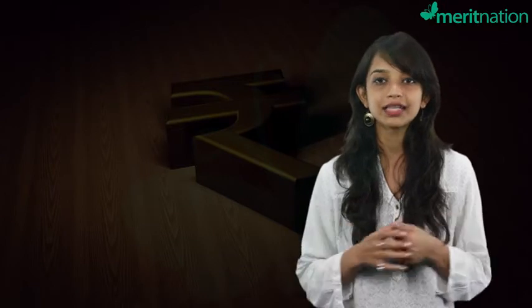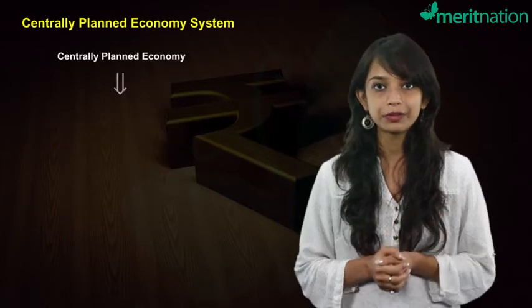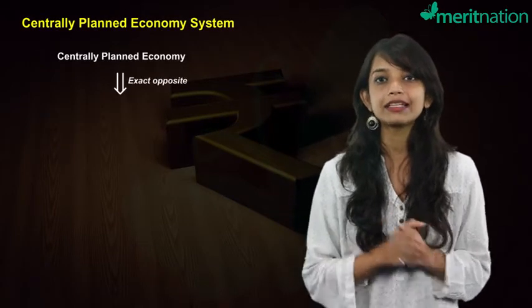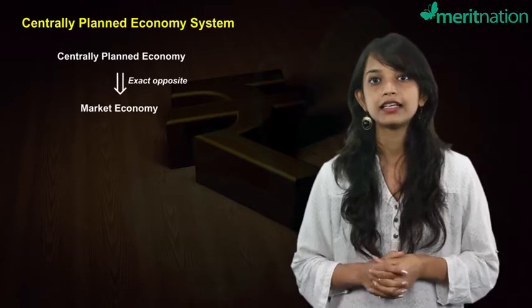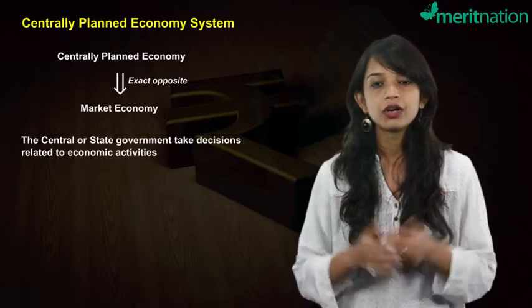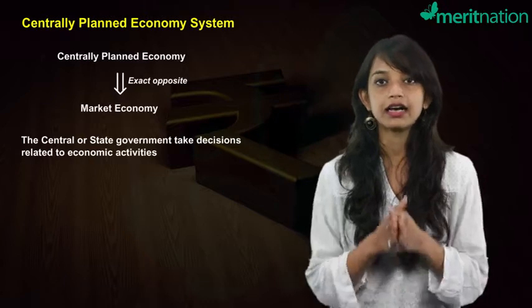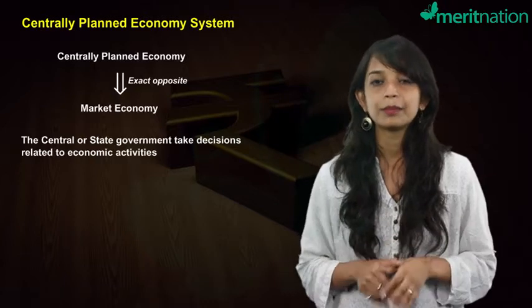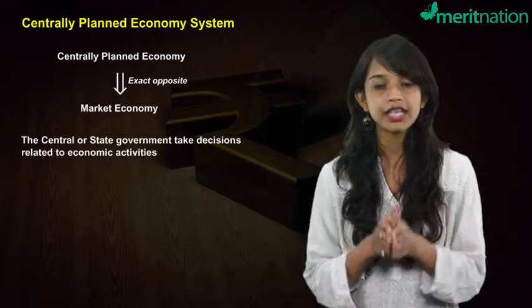In this video we'll discuss the second type of economic system, that is the centrally planned economy. A centrally planned economy is the exact opposite of a market economy. In a centrally planned economy, all the decisions related to economic activities are undertaken by the central or state government.